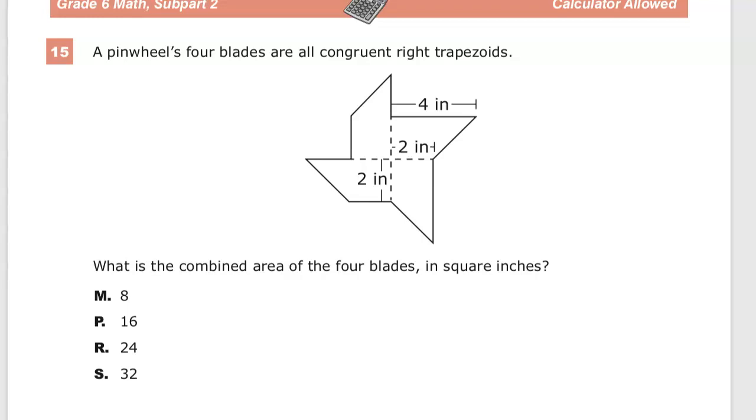This is the grade six math practice test for T and Ready. Question currently number 15. A pinwheel's four blades are all congruent. Here's that. Right trapezoids. What is the combined area of the four blades in square inches?